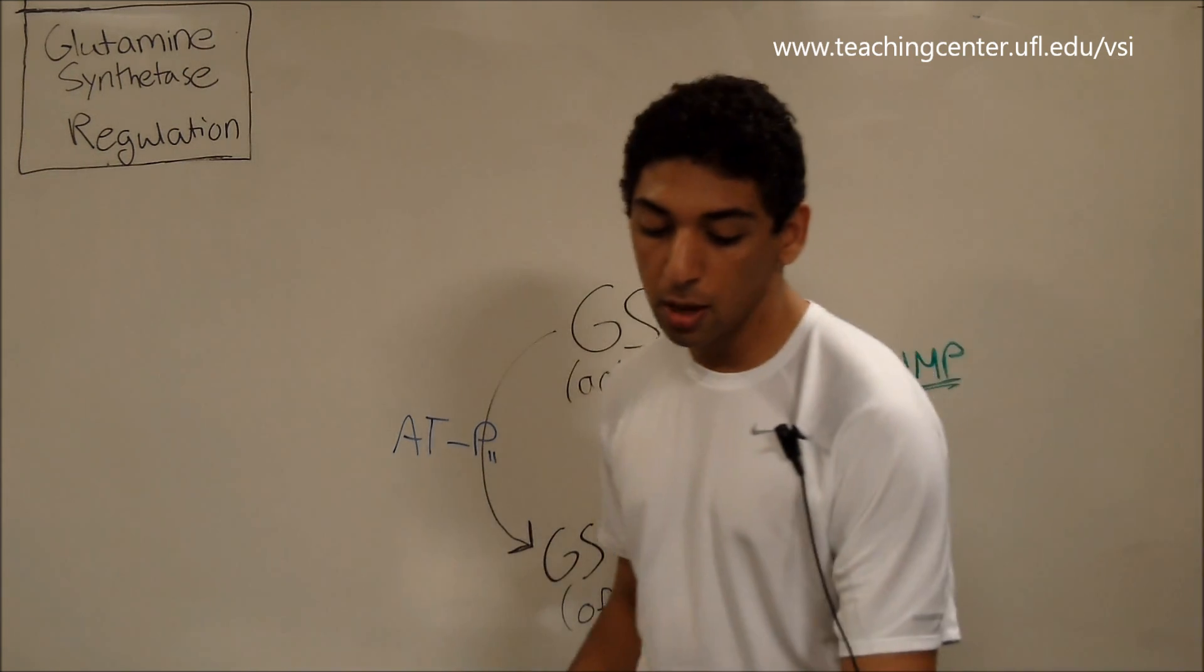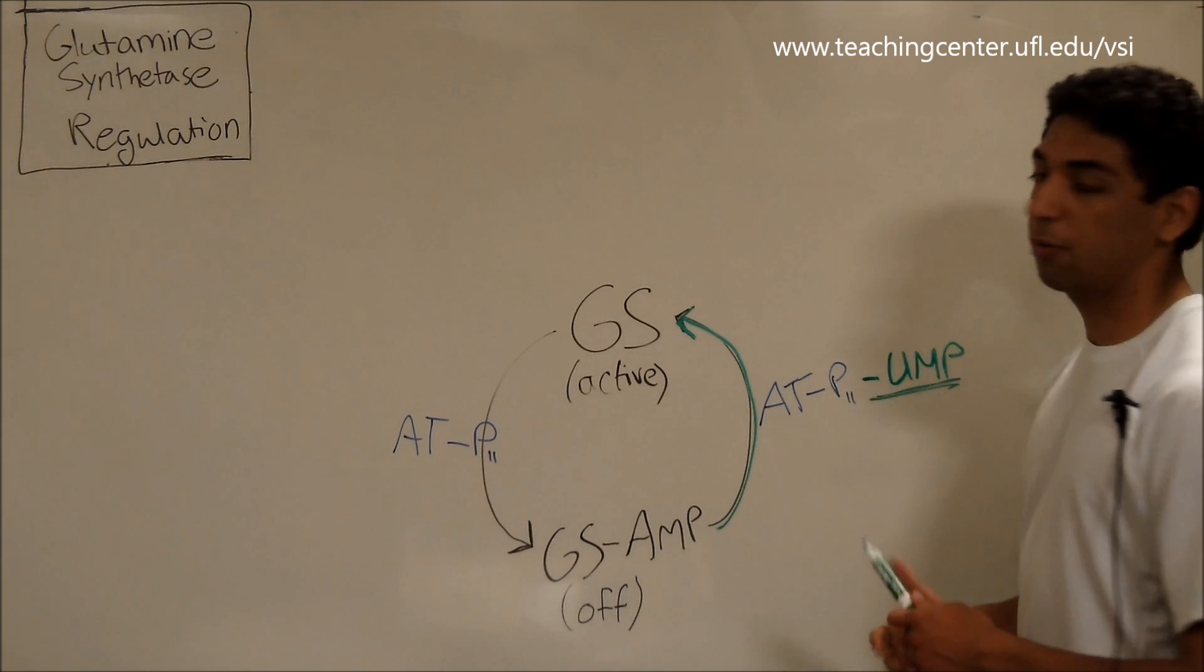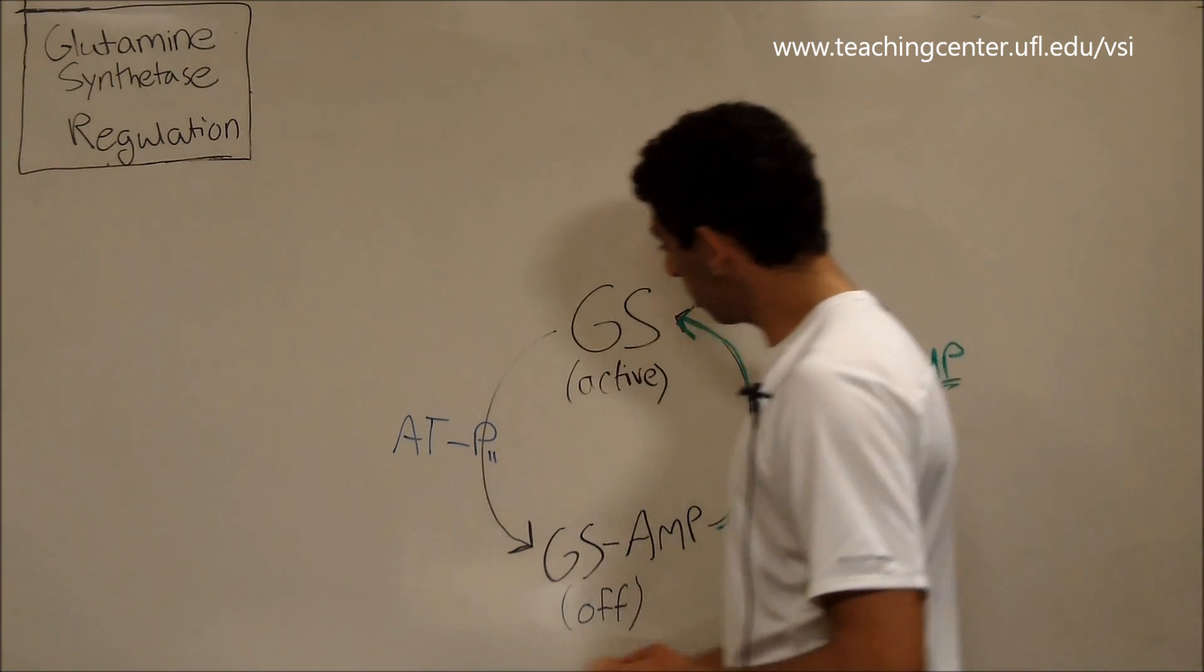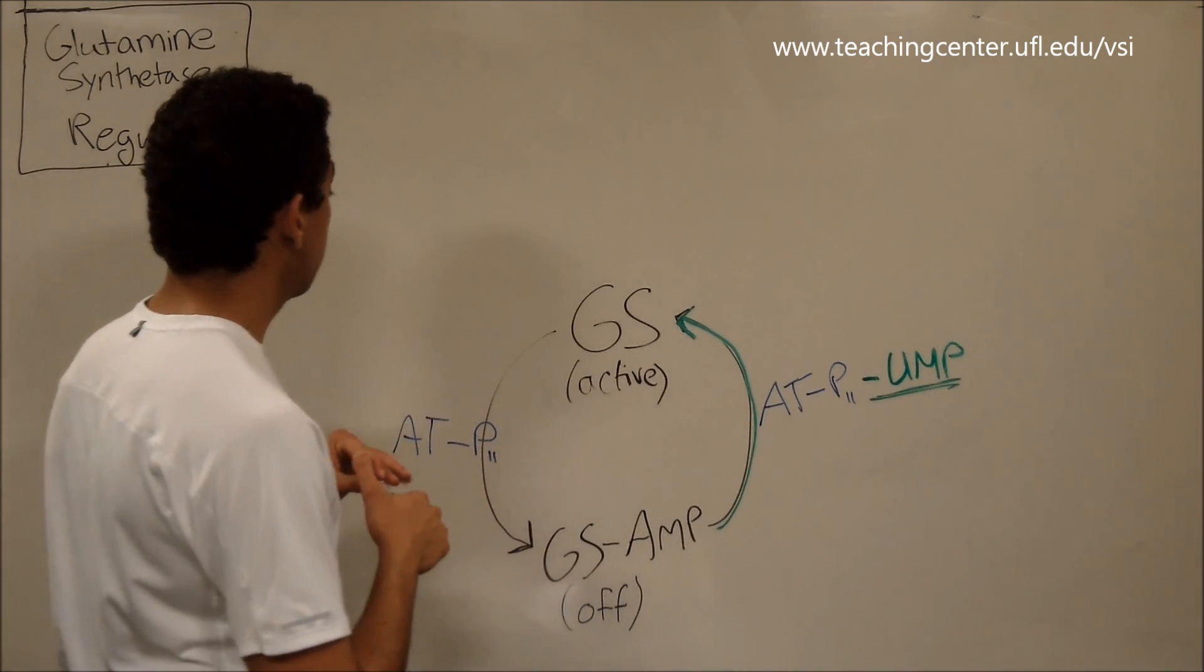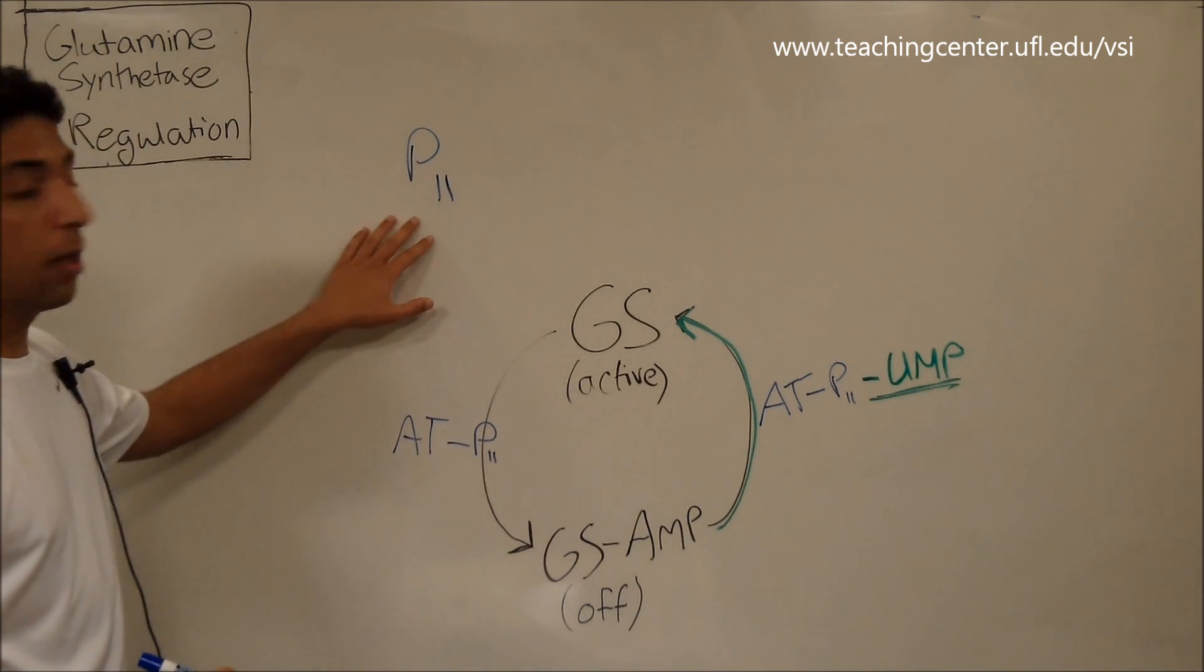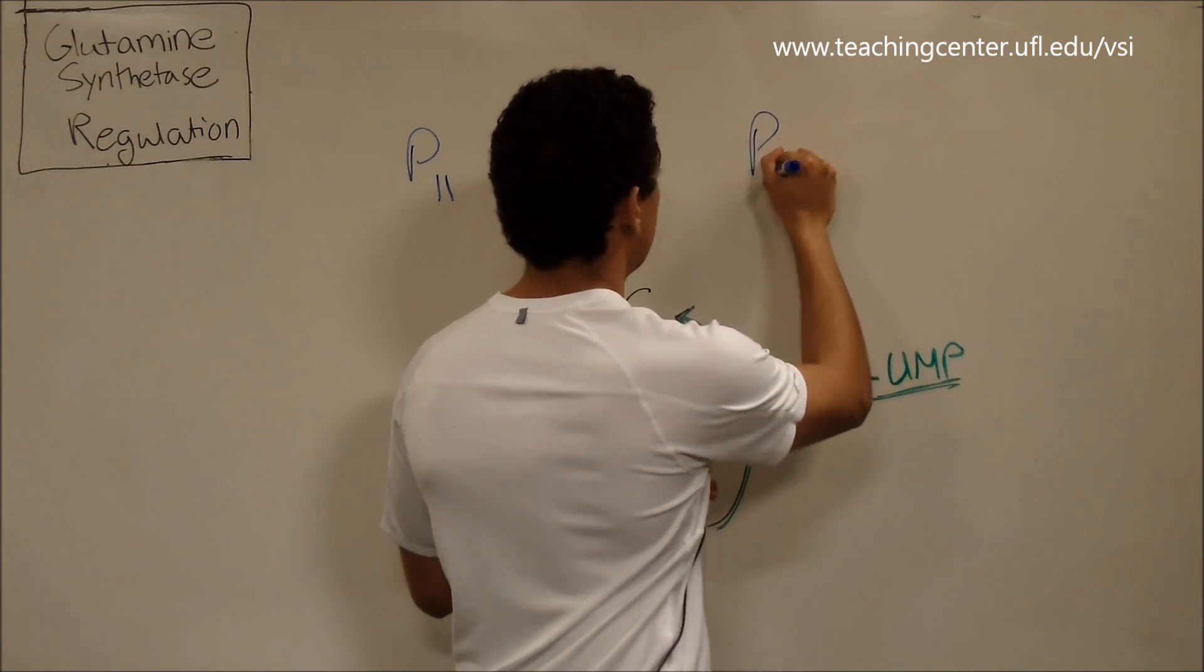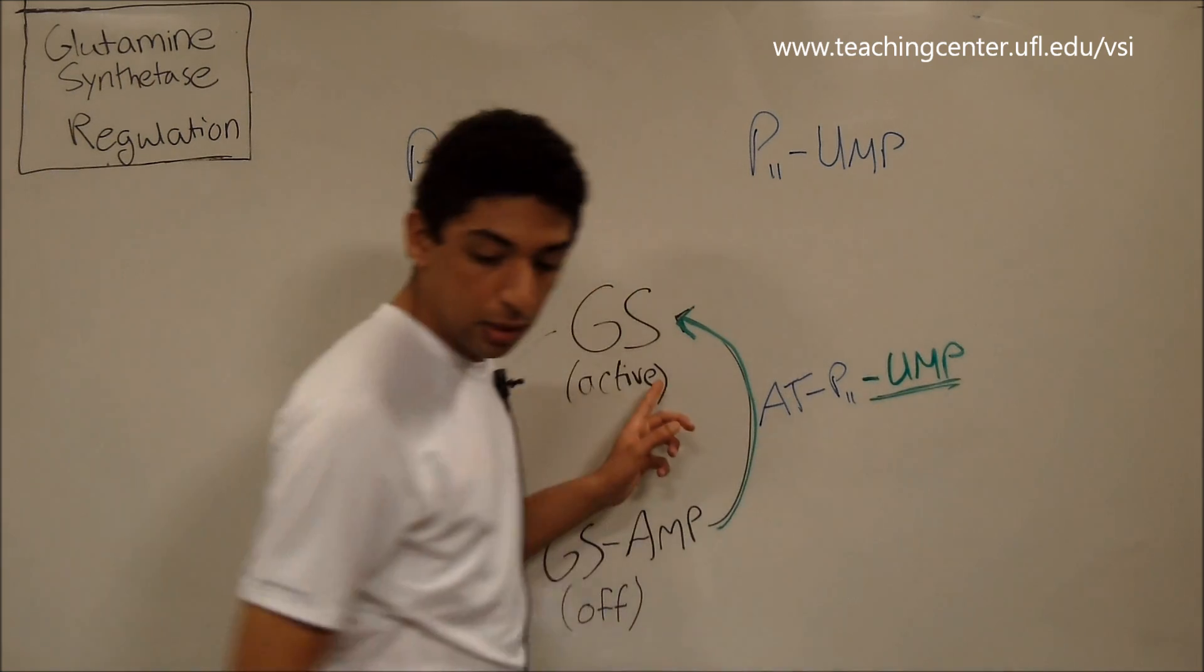So now the key question becomes, how do we attach the UMP to adenyl transferase P2 and how do we take it off? Because that's really what's going to regulate which half of this reaction is on and which half is off. So I'm going to draw that up here. So on this side, we've got regular P2 with no UMP, which would deactivate glutamine synthetase. On this side, we have P2 with the UMP, and that would turn glutamine synthetase on.